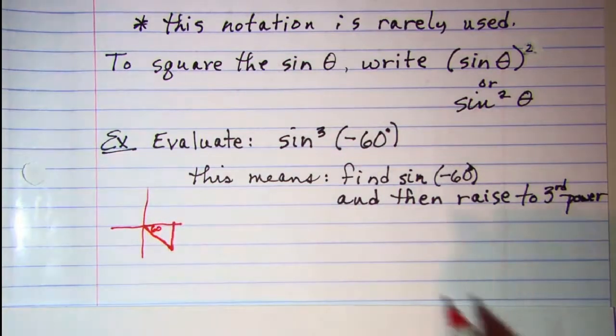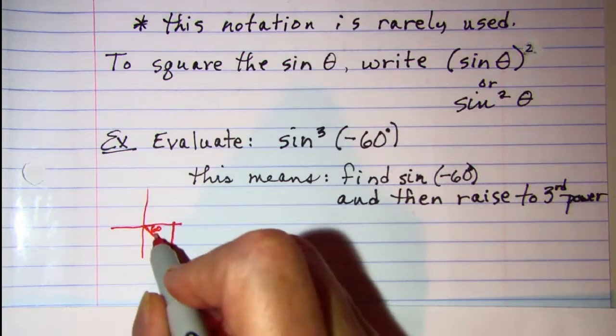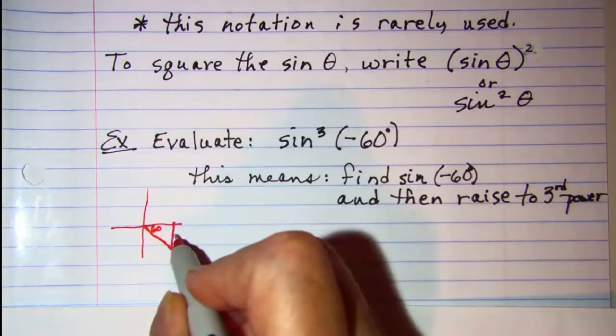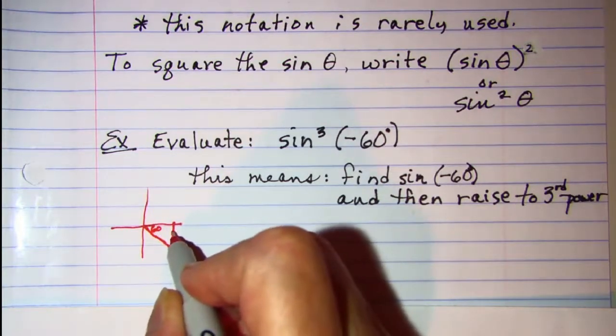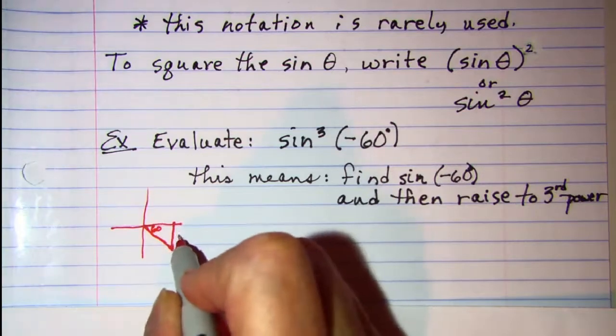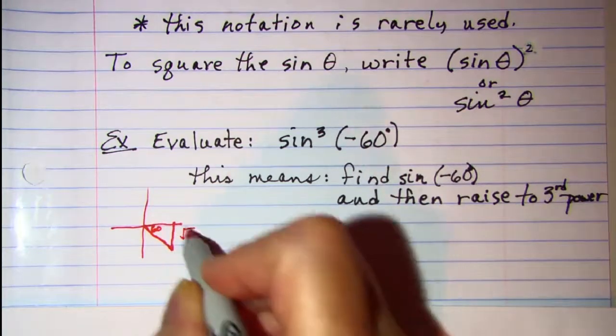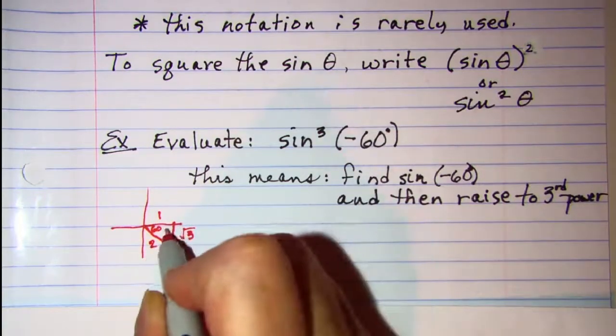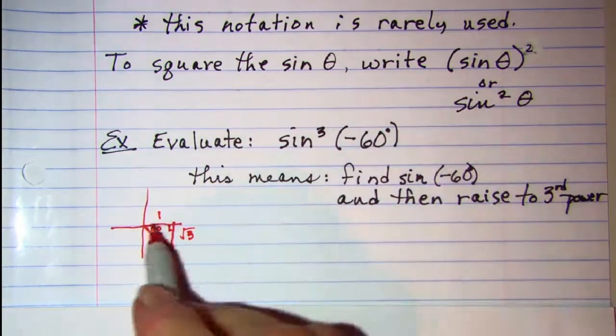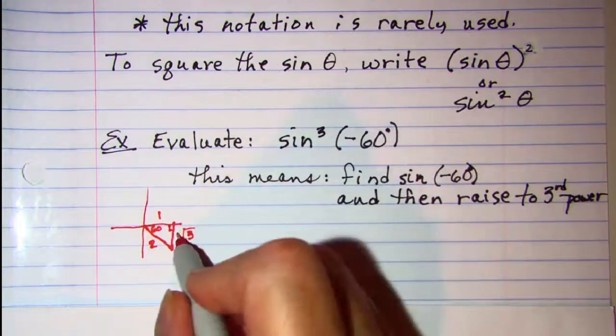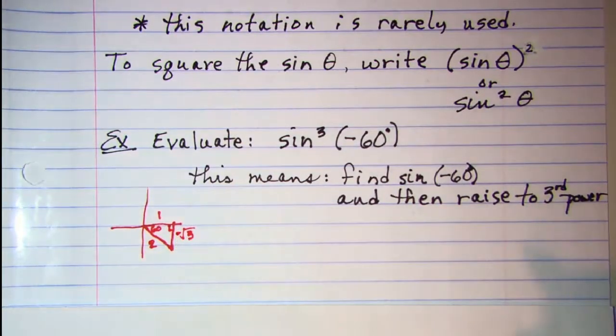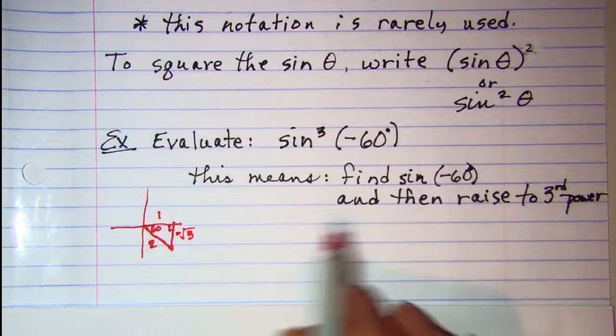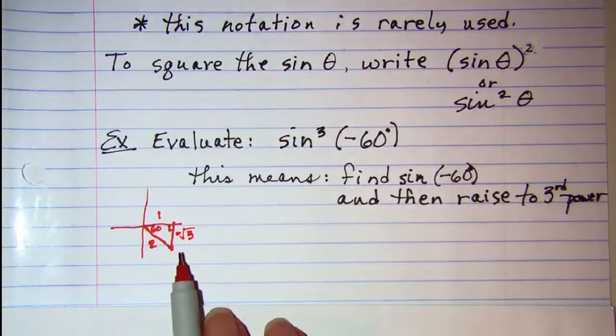So there is negative 60 and then put our reference sides in there. The side opposite the 60 is √3, the side adjacent would be 1, and then the hypotenuse is 2, and the √3 is negative. So there's our reference triangle.